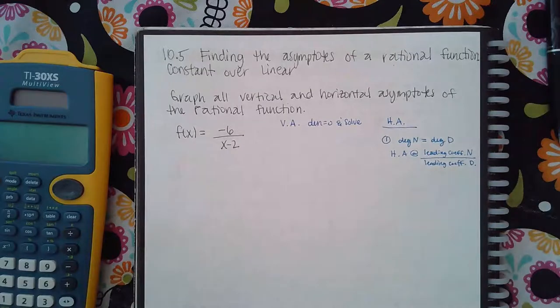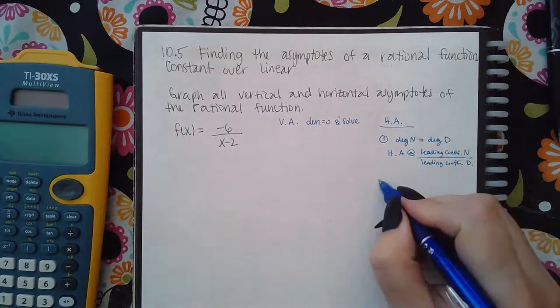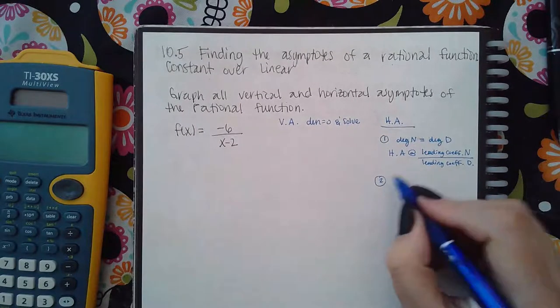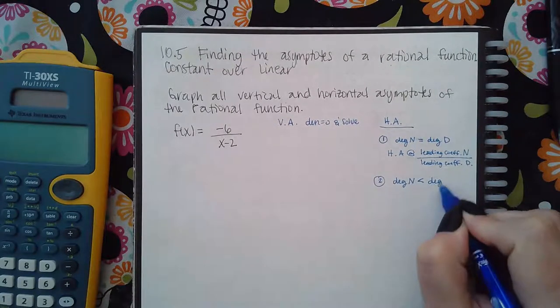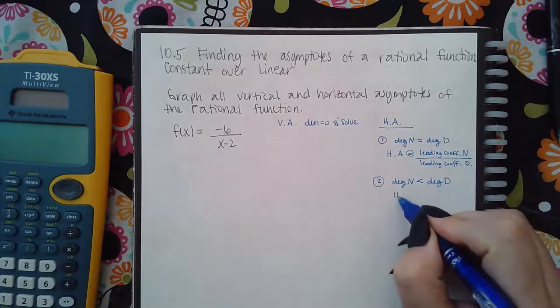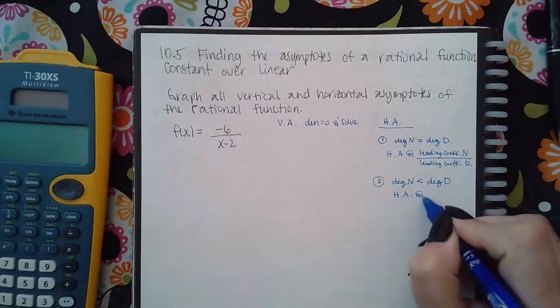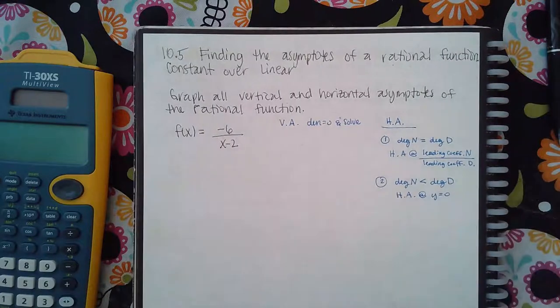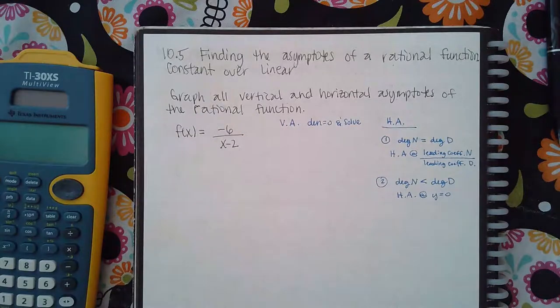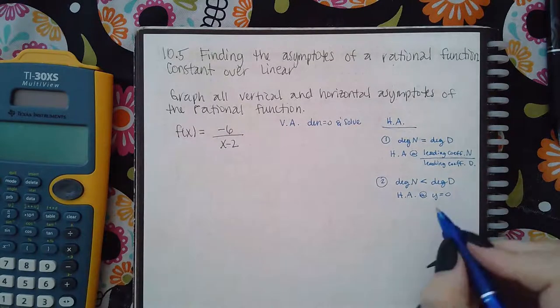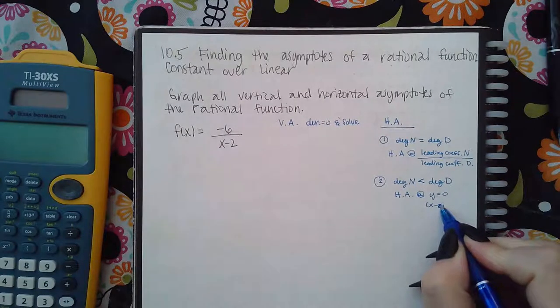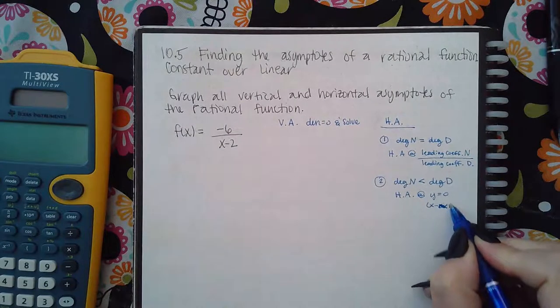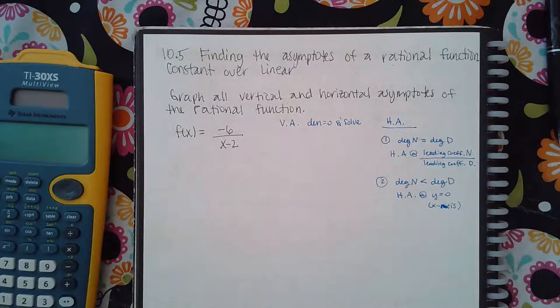Okay, and eventually we'll see that. Or if you have case two, where the degree of the numerator is less than the degree of the denominator, then the horizontal asymptote is automatically at y equals zero. There's nothing to do other than recognize it. What is y equals zero? That's the x-axis. The equation y equals zero is on top of the x-axis.